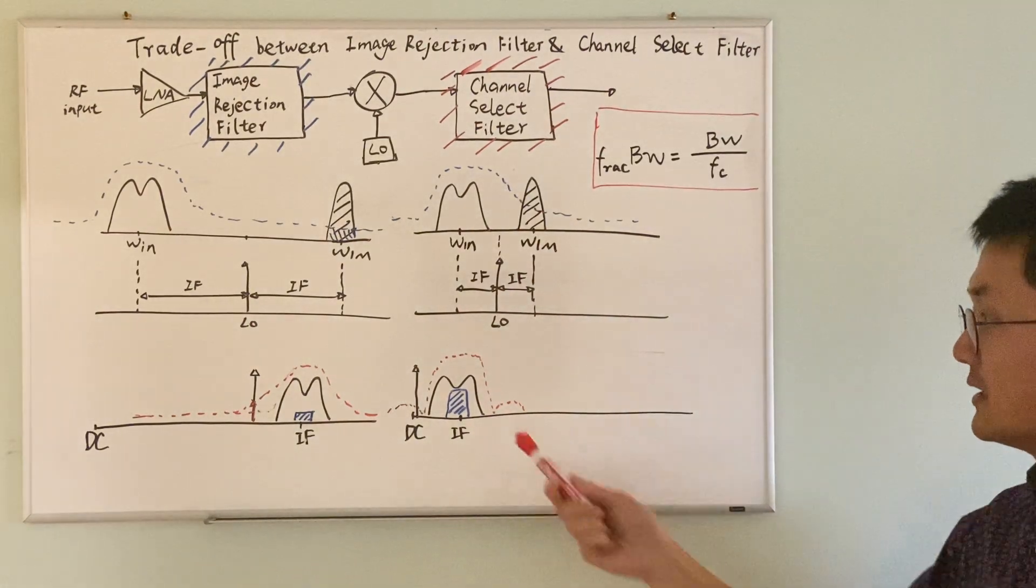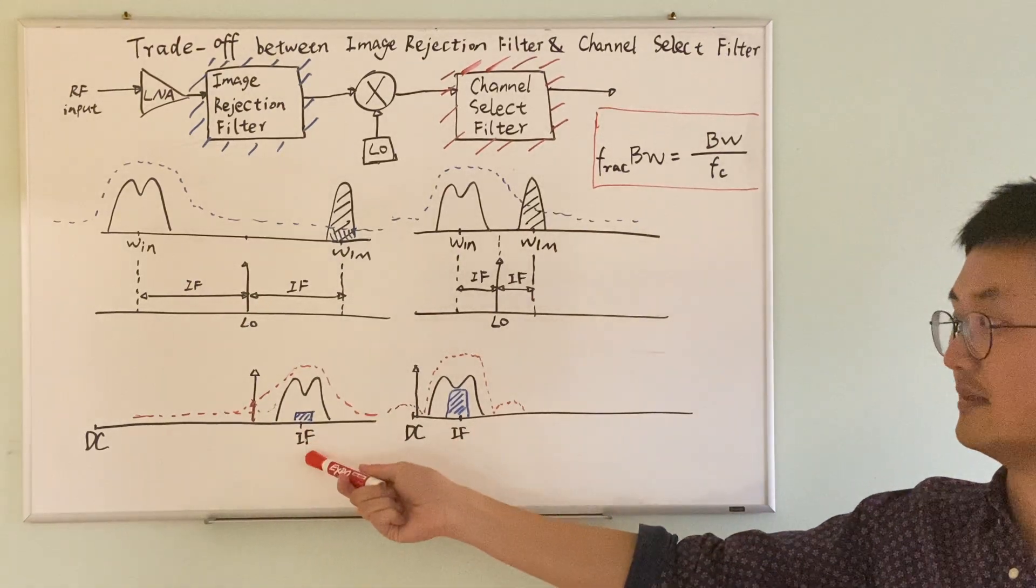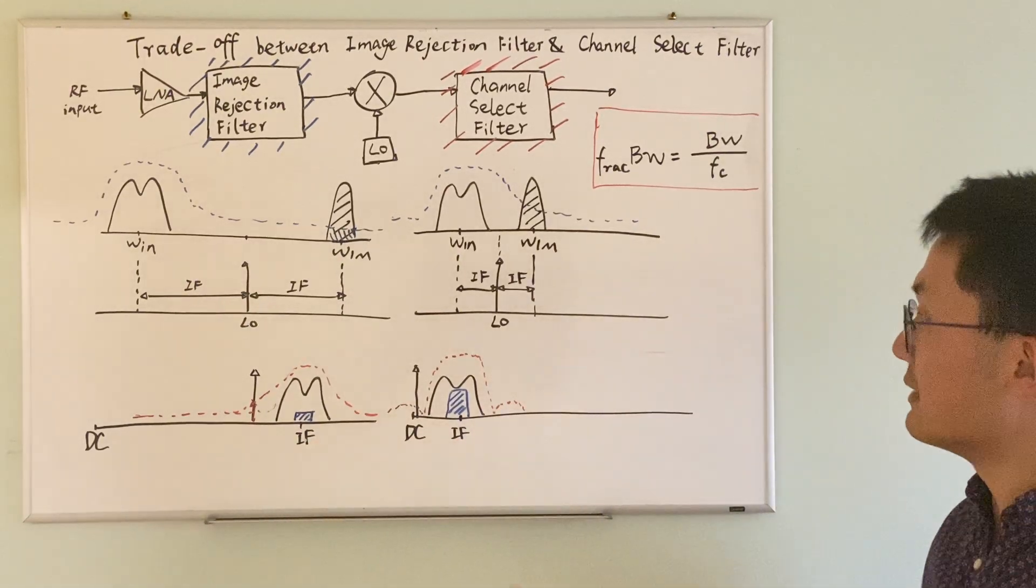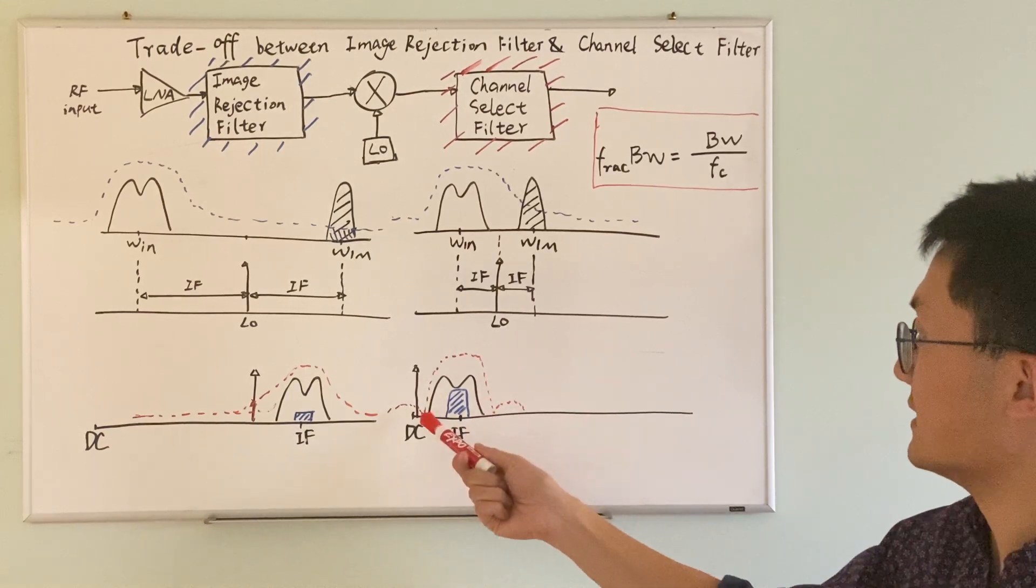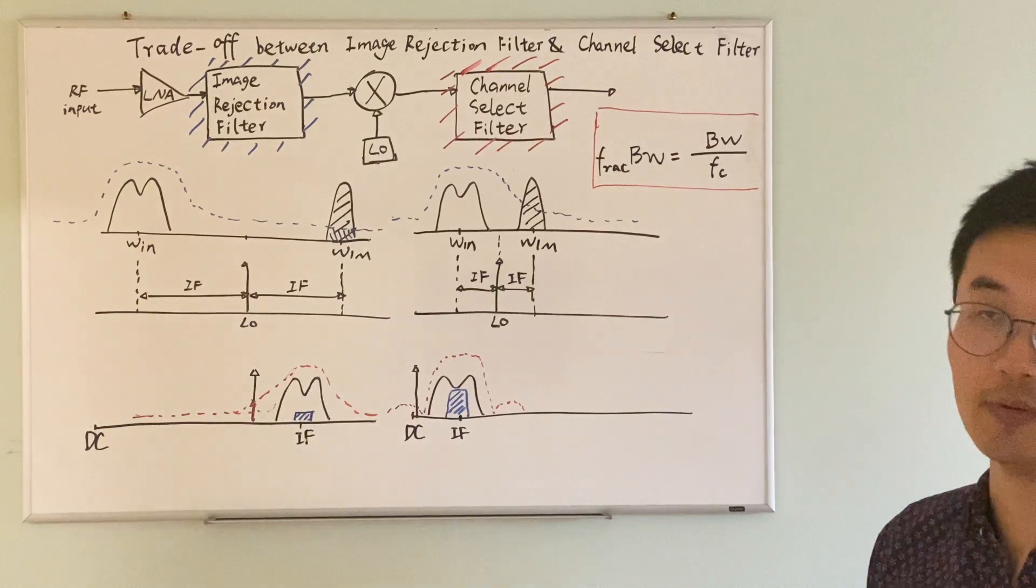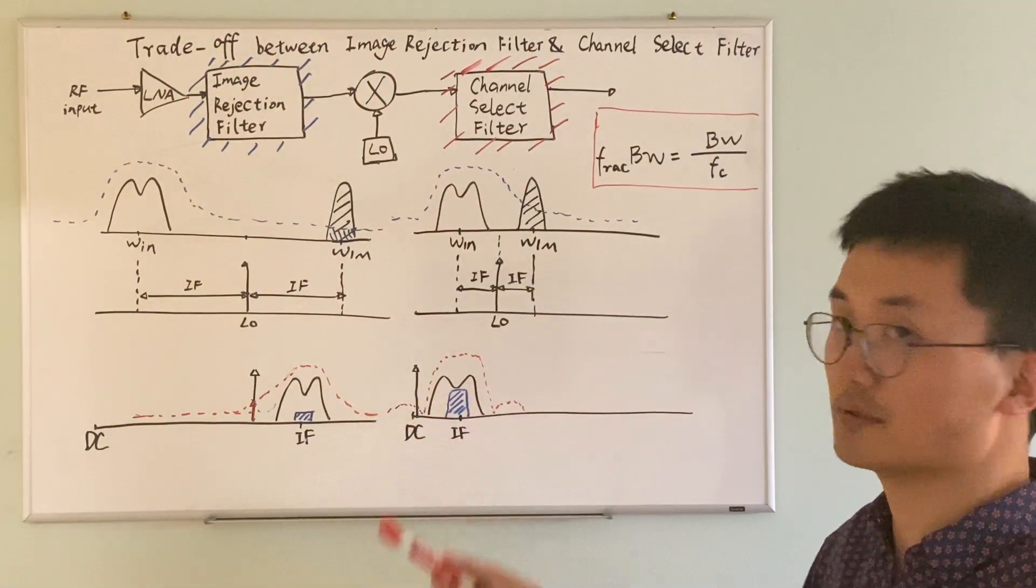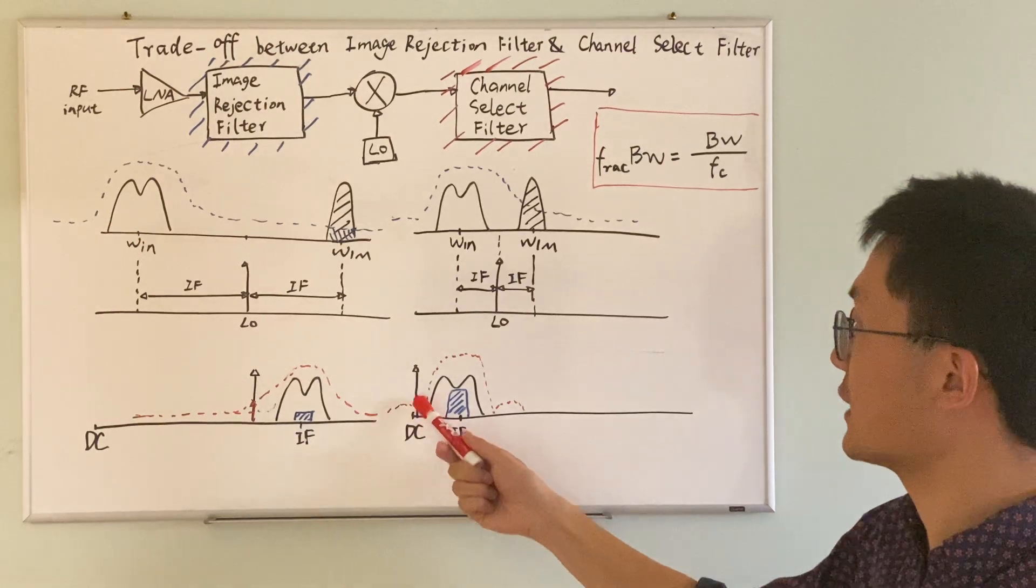In this case, the center frequency IF is far smaller than the previous case. What that means is that we can really design this channel select filter to make the bandwidth really small. That is how we're able to completely filter out the adjacent channel spurs.